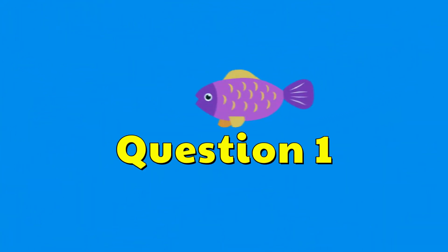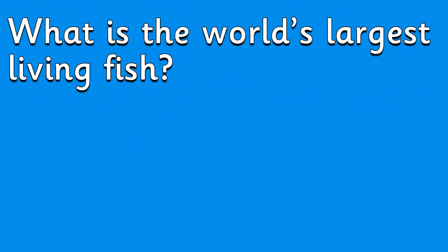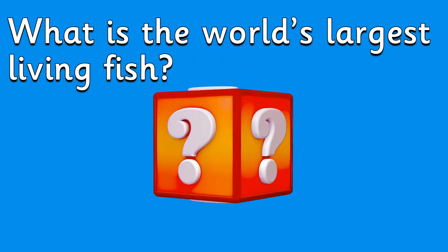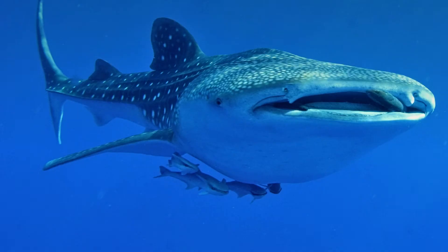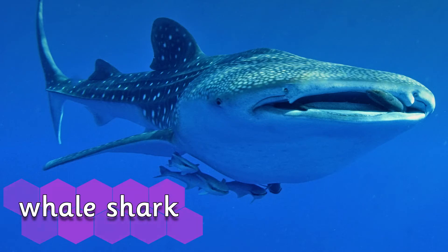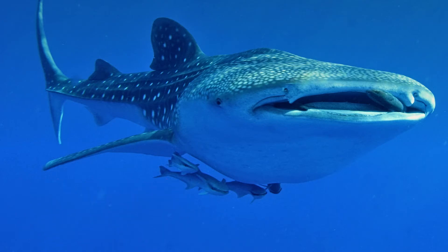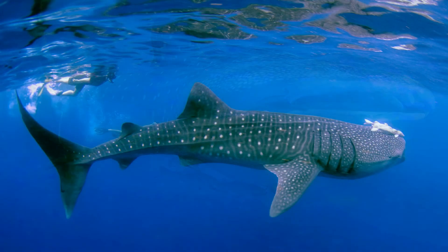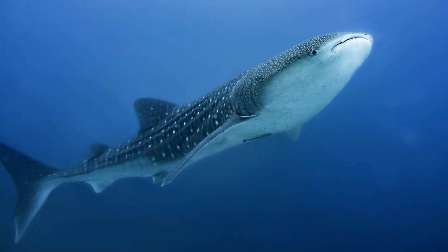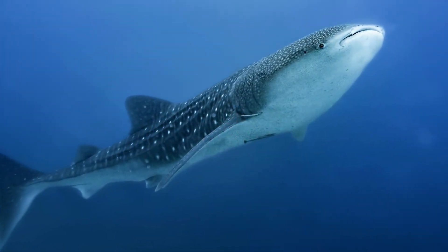Question one. What is the world's largest living fish? The biggest fish on the planet is a whale shark. It can grow up to 12 metres long and can be as heavy as 18.7 tonnes — that's as heavy as a double decker bus.